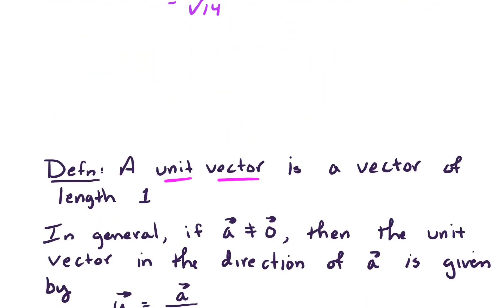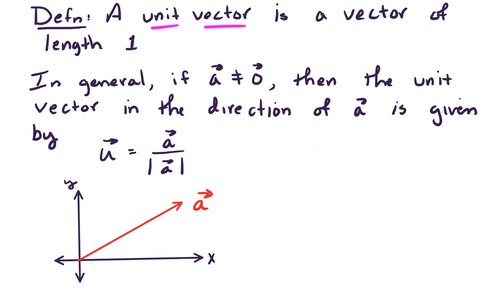Let's take a look at another definition. Now this definition is of a unit vector. A unit vector is a vector of length 1. In general, if vector a is not the 0 vector, then the unit vector in the direction of a, and I'm going to highlight that, that's really important. The unit vector in the direction of a is given by the following formula. So u for unit vector, it equals a divided by the magnitude of a.